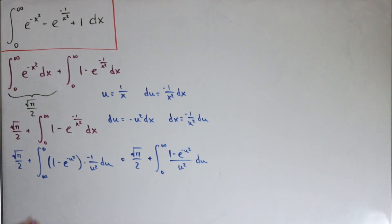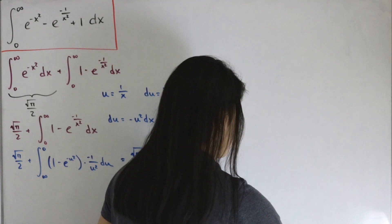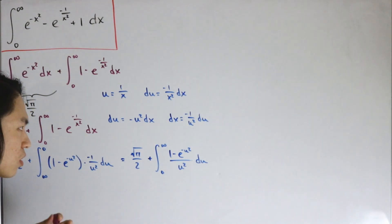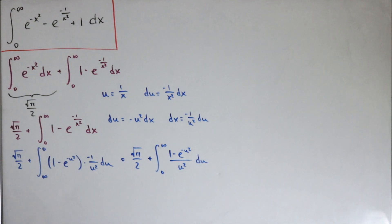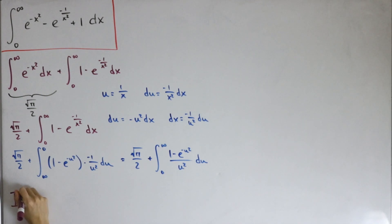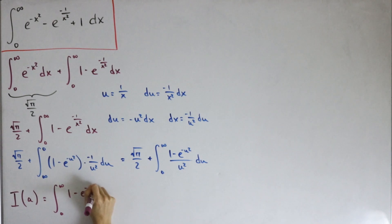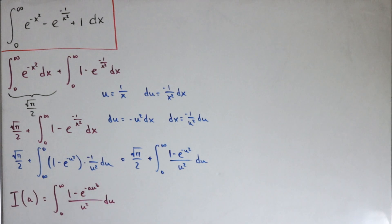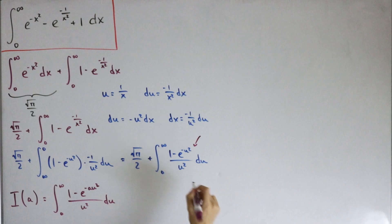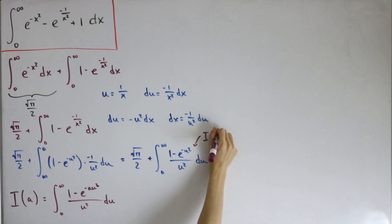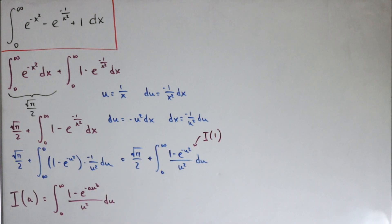This poses a challenge. This is where our generalization comes in. We define capital I of a as the integral from zero to infinity of one minus e to the negative a times u squared, divided by u squared, du. Our target integral is then I evaluated at a equals one, that is I sub one.